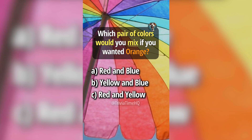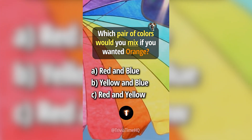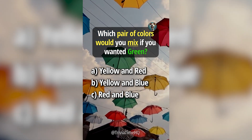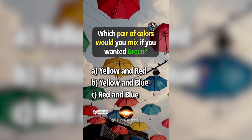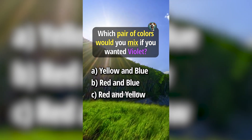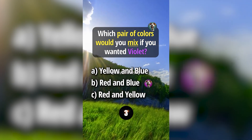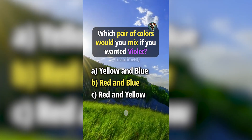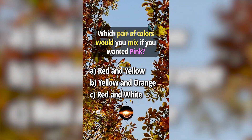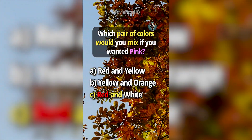Which pair of colors would you mix if you wanted orange? Answer C, red and yellow. Which pair of colors would you mix if you wanted green? Answer B, yellow and blue. Which pair of colors would you mix if you wanted violet? Answer B, red and blue. Which pair of colors would you mix if you wanted pink? Answer C, red and white.